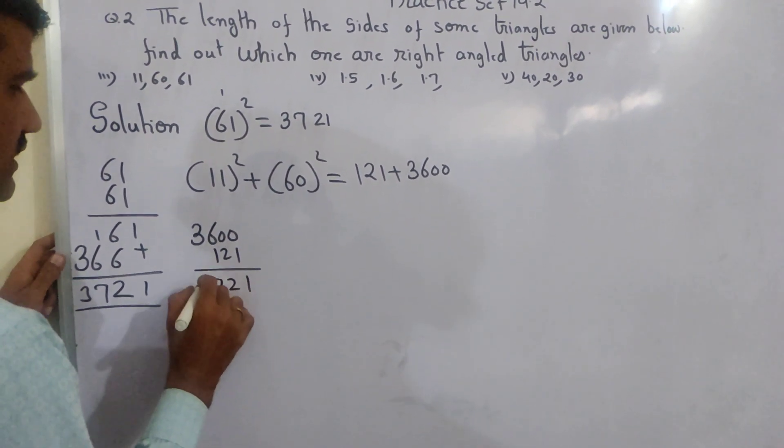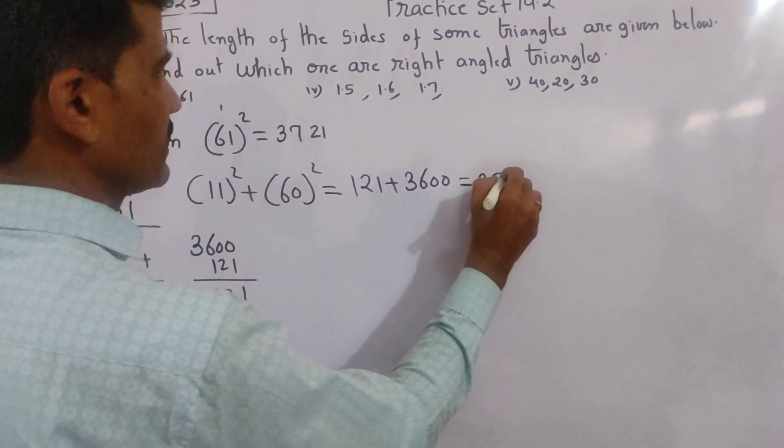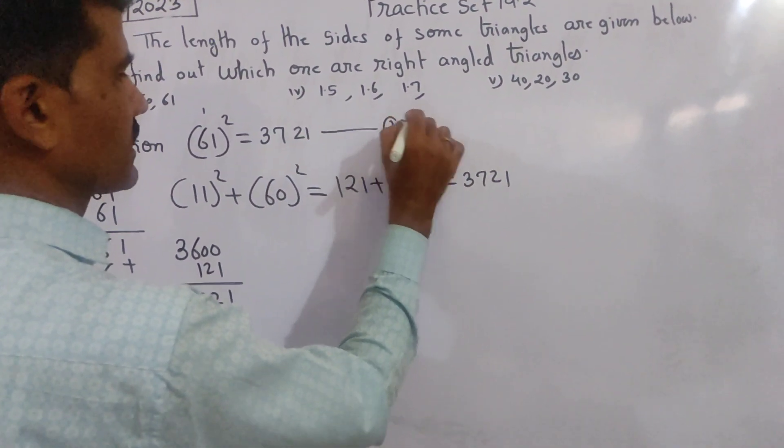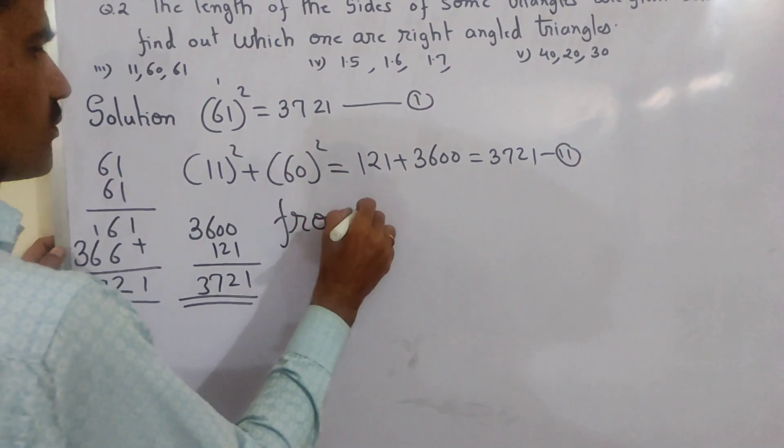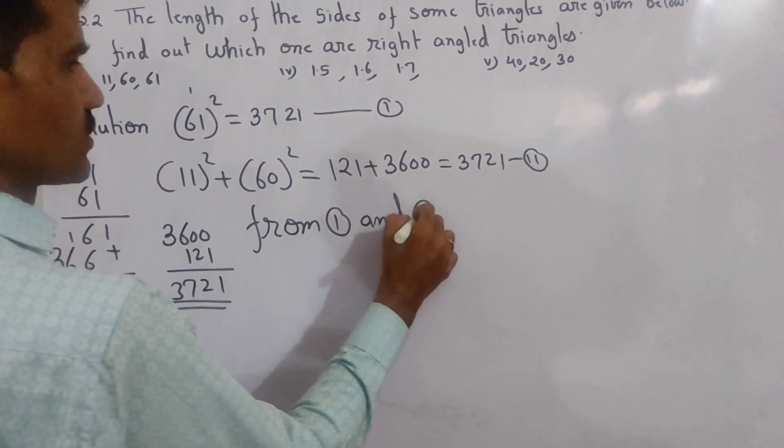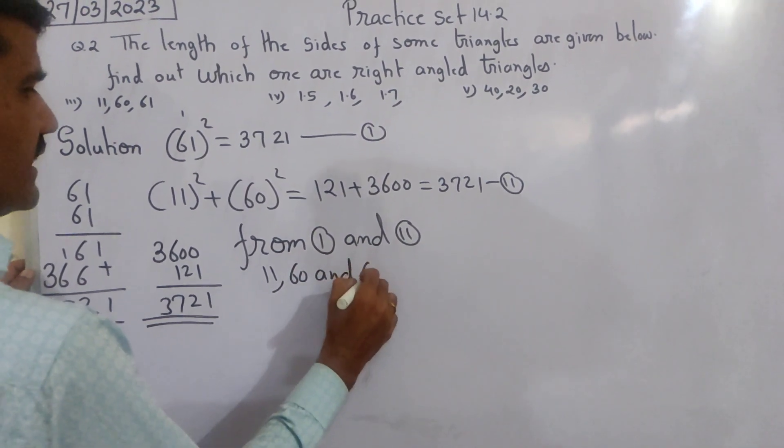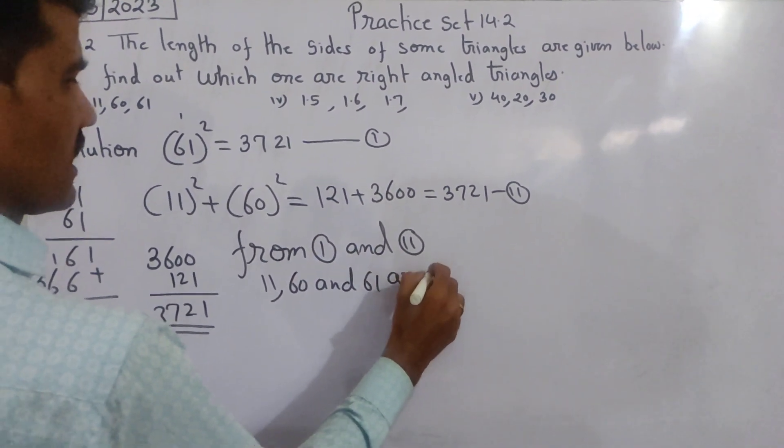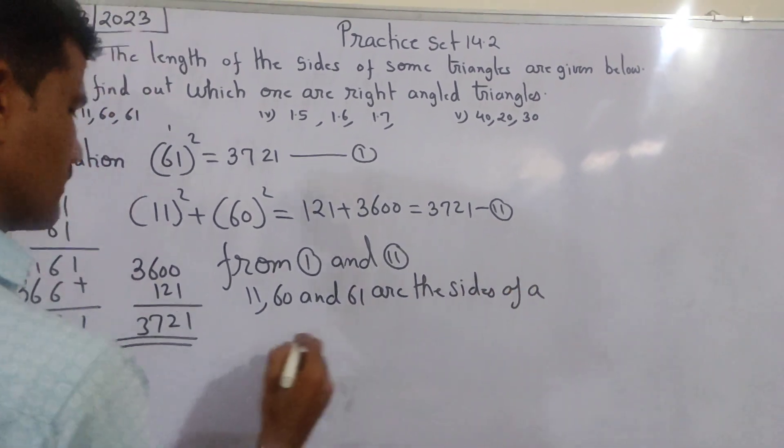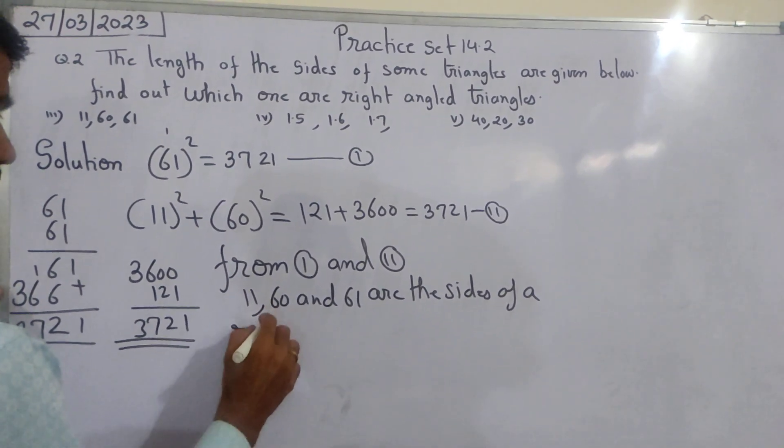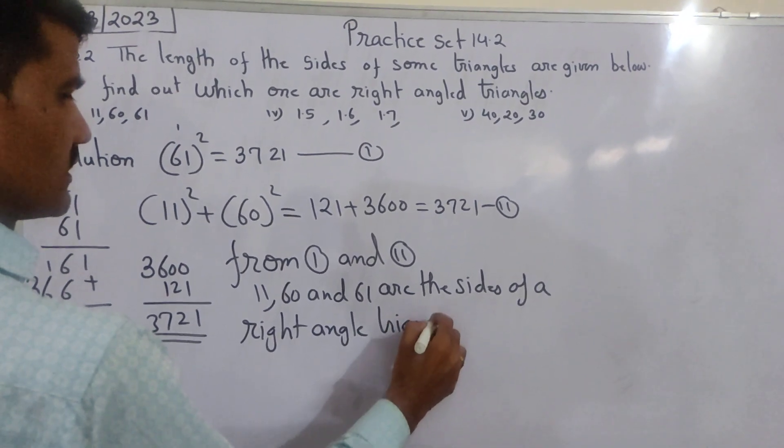121 plus 3600. Adding: 1, 2, 1, 1, 2, 7, 3, 3, 7, 2, 1. Iska answer aaya 3721. Isko maine 1 keh diya, isko maine 2 keh diya. From 1 and 2, 11, 60 and 61 are the sides of a right angle triangle.